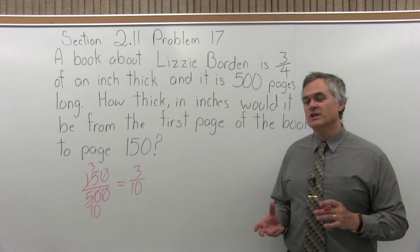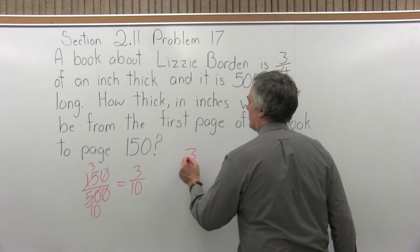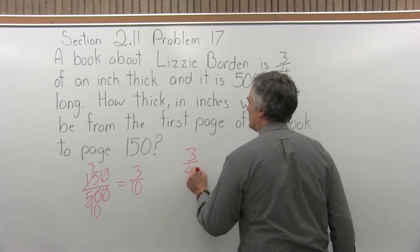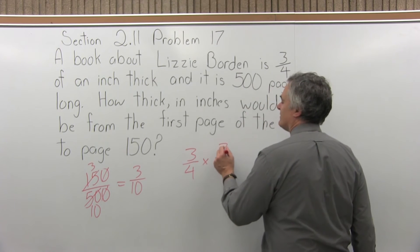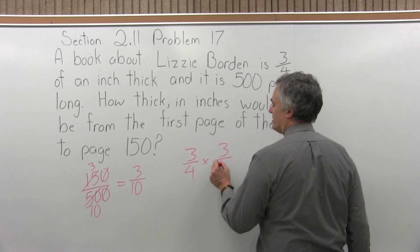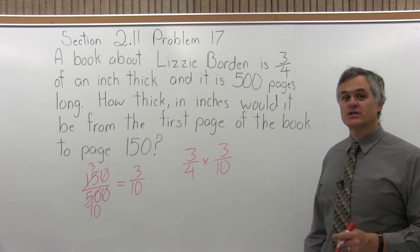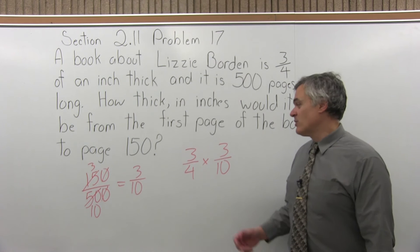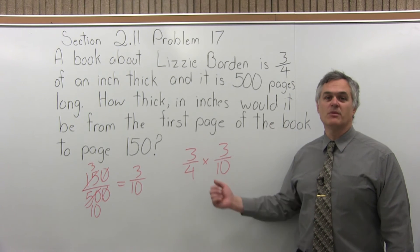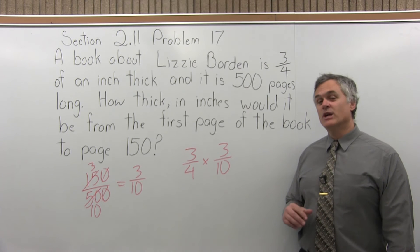The whole book is 3 quarters of an inch. We've read 3 tenths of it, so we multiply 3 quarters times 3 tenths. When we multiply fractions: numerator times numerator, denominator times denominator.